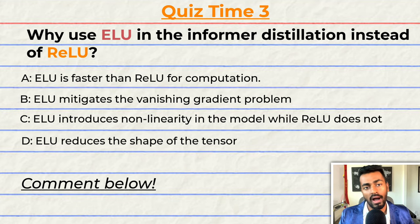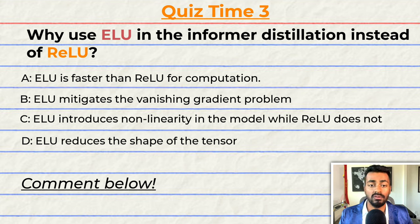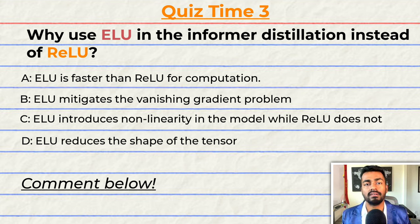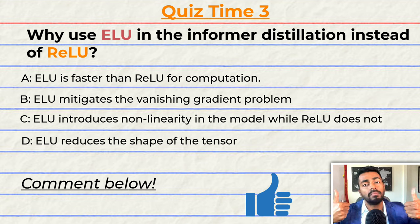Quiz time! This is going to be a fun one. Why use ELU in the informer distillation over ReLU? A: ELU is faster than ReLU for computation. B: ELU mitigates the vanishing gradient problem. C: ELU introduces non-linearity in the model while ReLU does not. Or D: ELU reduces the shape of the tensor. Comment your answer down below and let's have a discussion. If you think I deserve it, please consider giving this video a like because it will help me out a lot.